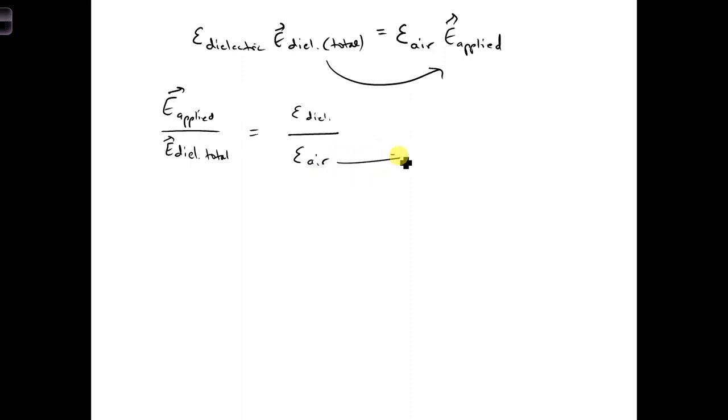The permittivity of air is epsilon naught. Then looking at the left side of this equation, we can see that this gives us a ratio of how much the electric field changes inside of the dielectric slab.